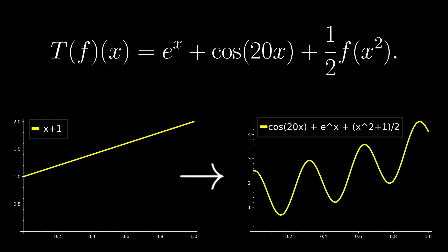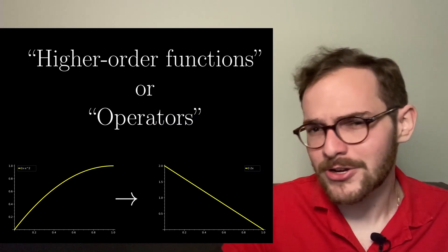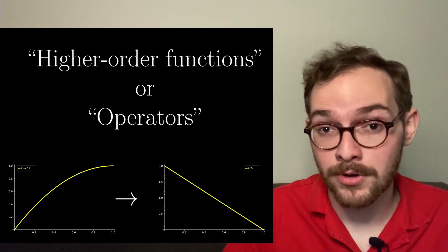Let's look at an example. If we input this function, we get this other function as output. It might seem weird to have a function be inputting and outputting functions, but there's a good chance you've seen something along these lines already. The derivative is something that takes in a function as input and returns another function as output. Functions of this type are usually called higher order functions or operators.